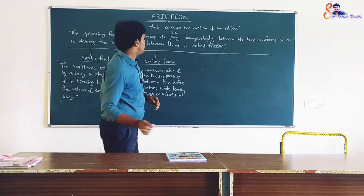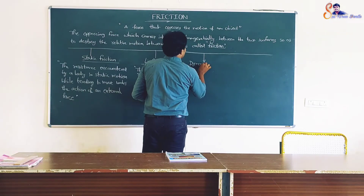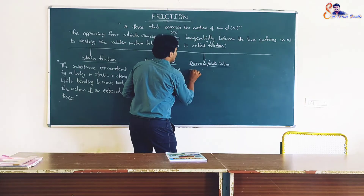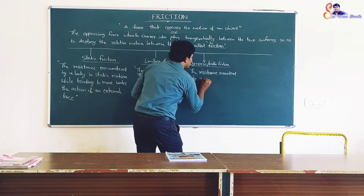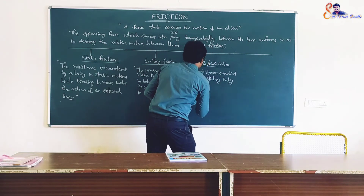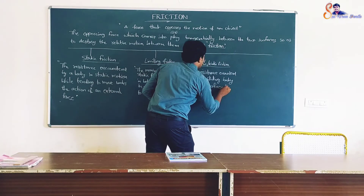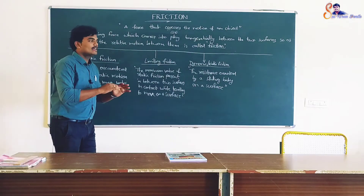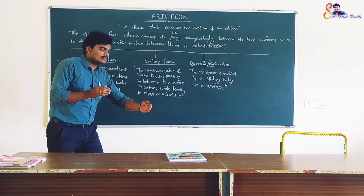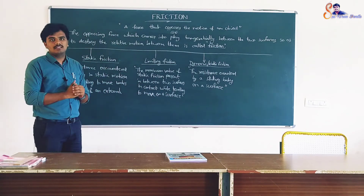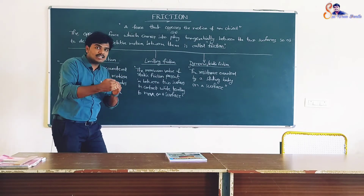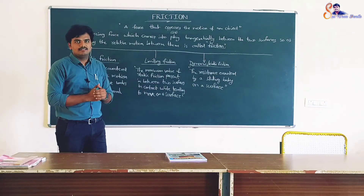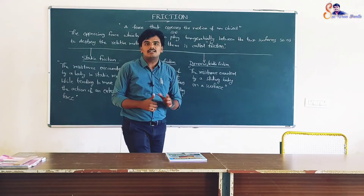Next, dynamic or kinetic friction. The resistance encountered by a sliding body on a surface is called dynamic friction or kinetic friction. Using the same example: the resistance encountered by a sliding body on a surface is called dynamic friction.